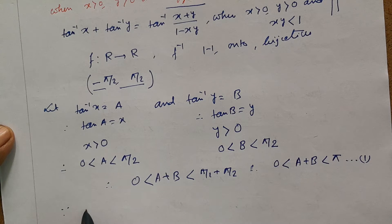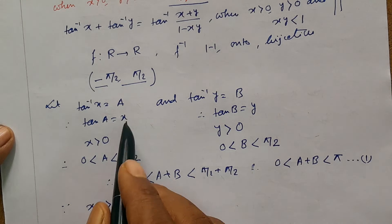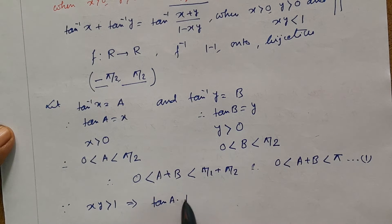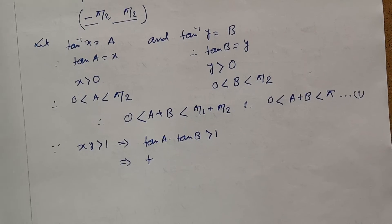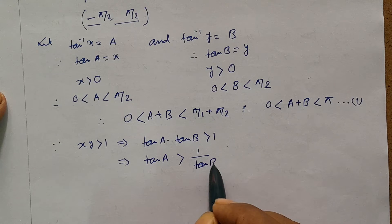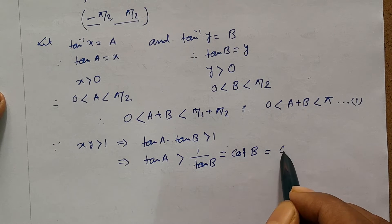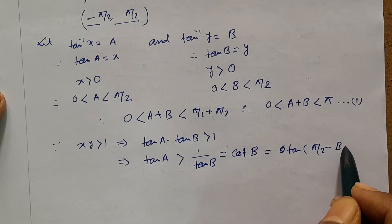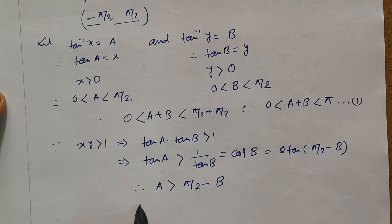Since xy greater than 1, this implies tan a times tan b greater than 1. This implies tan a is greater than 1 divided by tan b, meaning tan a is greater than cot b, which equals tan(pi by 2 minus b). Therefore a is greater than pi by 2 minus b, which gives us a plus b greater than pi by 2.